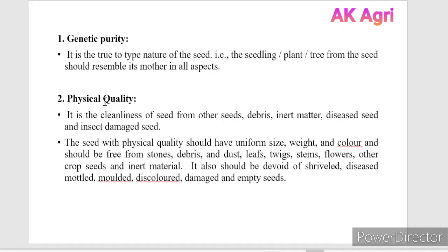The next component is physical quality. It is the cleanliness of the seed from other crop seeds, debris, inert matter, diseased seeds, and insect-damaged seeds.